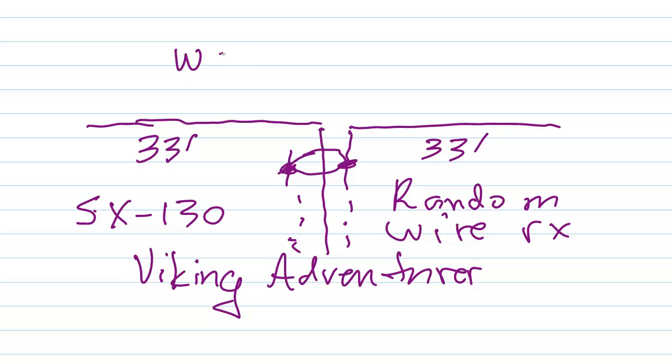I started out as a novice, WN0OKV. Back then, the phonetics went Oscar King Victor. Now they go Ocean Kilo Victor, but I never used phone, so it didn't matter. The N was for novice. Later, I changed to WA0OKV until 1977, when I became W1GV as a ham radio operator of W1AW at the American Radio Relay League headquarters in Newington, Connecticut.